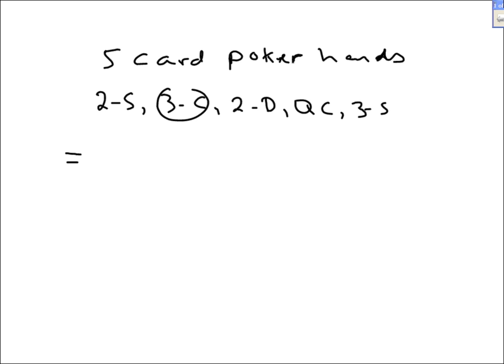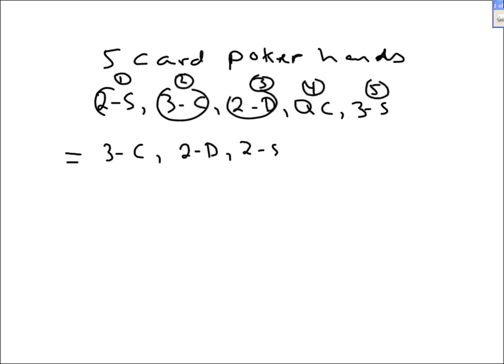This is the same as getting the three of clubs first, then the two of diamonds, then the two of spades, then the three of spades, and then the queen. These are the same five cards — these hands are identical. So we don't want to count them twice. The order doesn't matter. The order of your five cards does not matter.